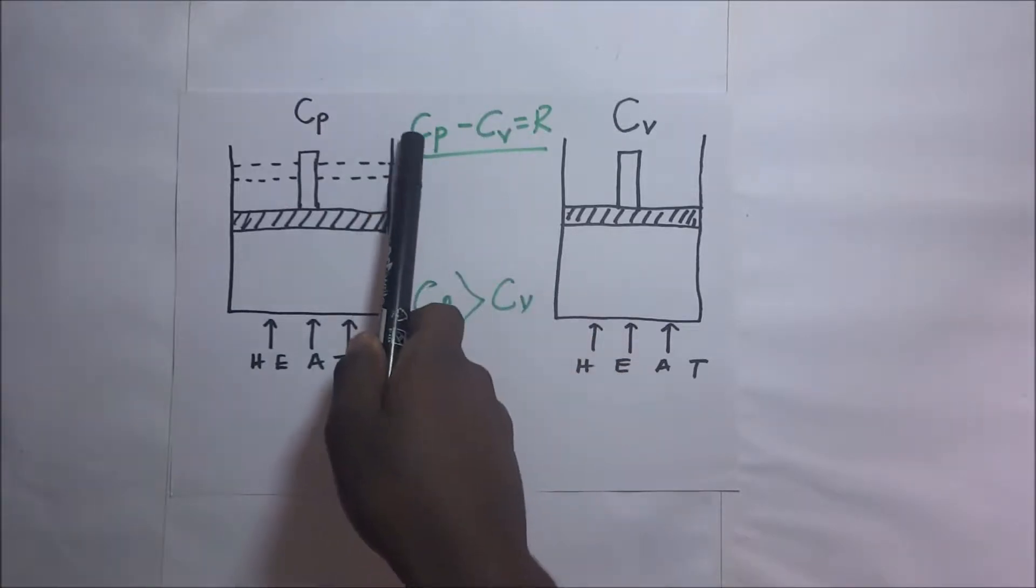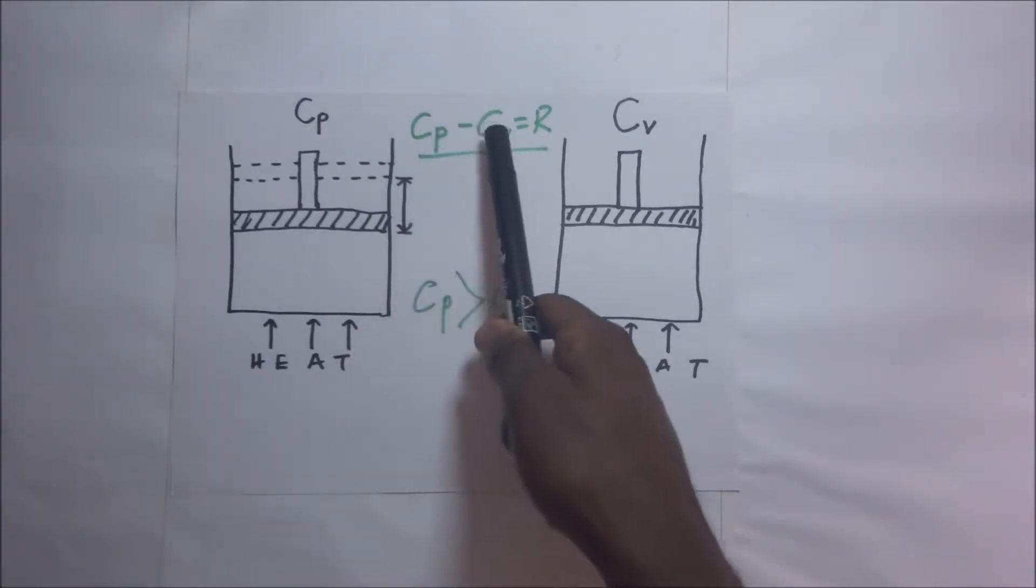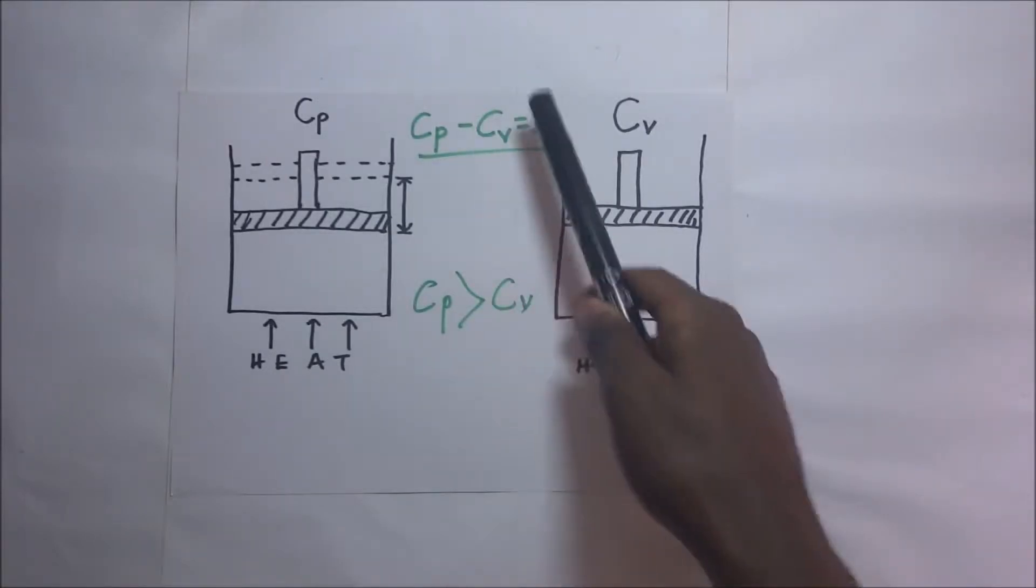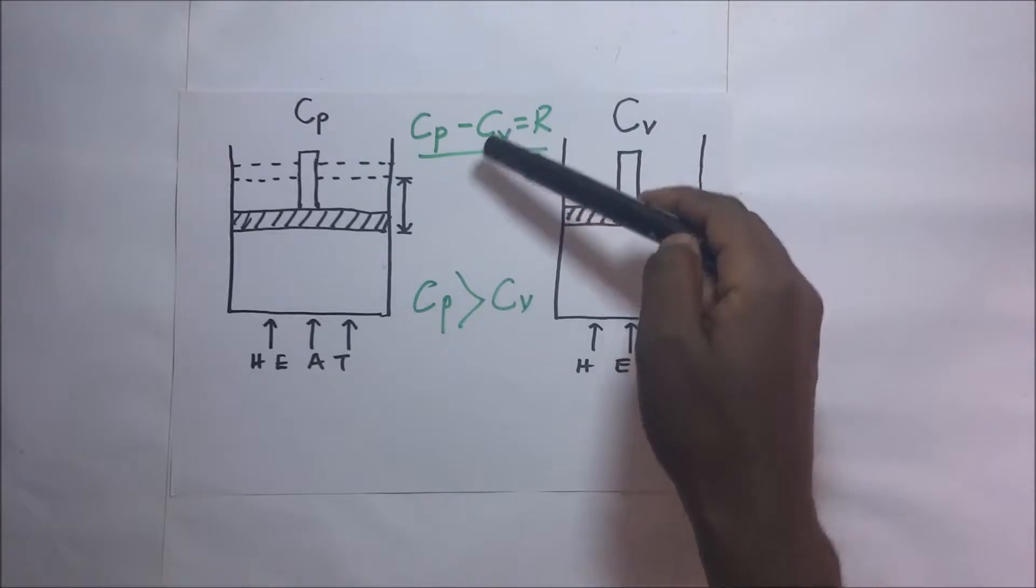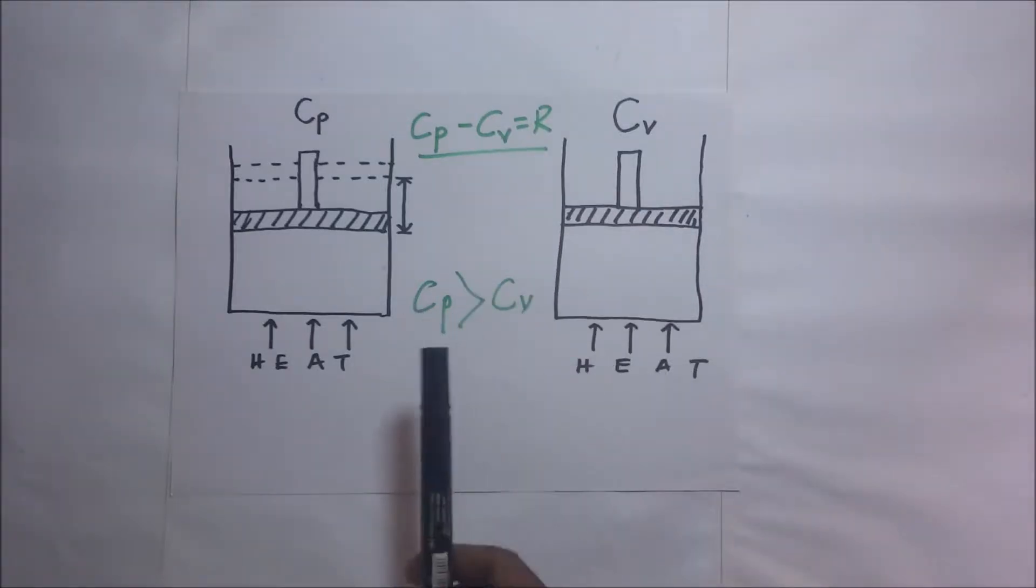Now of course we know that CP is the specific heat capacity at constant pressure. CV or C subscript V stands for specific heat capacity at constant volume. And in this session, we are going to explain why CP is greater than CV.